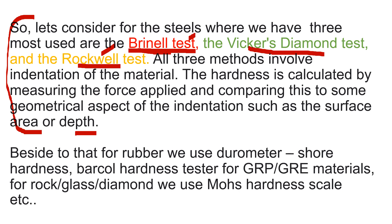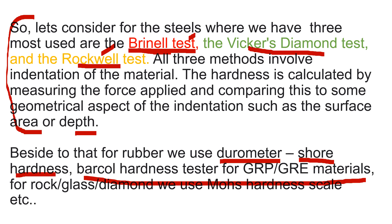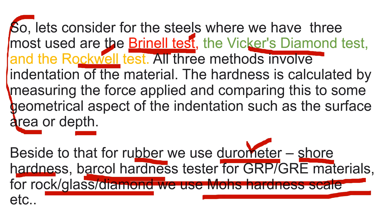For rubber we have a different type of equipment — we cannot use Brinell, Vickers, or Rockwell. We use a durometer, and the hardness unit is called Shore hardness. For GRP and GRE materials we use the Barcol hardness test. For rock, glass, and diamond we use the Mohs hardness scale. So the hardness scale differs for steel, rubber, GRP/GRE, and rock/glass/diamond.